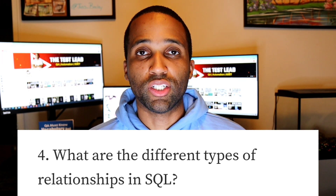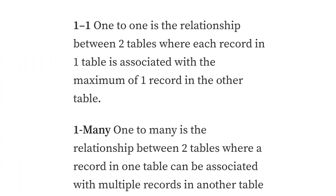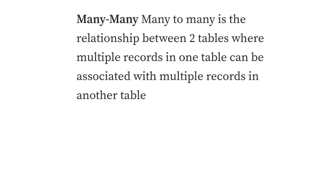Question 4: what are the different types of relationships in SQL? One to one is the relationship between two tables where each record in one table is associated with the maximum of one record in another table. One to many is the relationship between two tables where a record in one table can be associated with multiple records in another table. Many to many is the relationship between two tables where multiple records in one table can be associated with multiple records in another table.